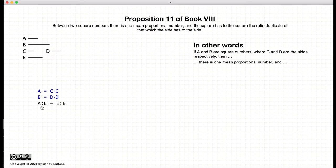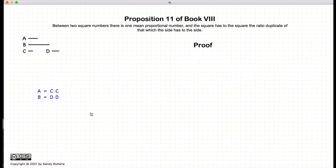Then there will be one number, e, such that a is to e and e is to b, and a is to e is equal to e is to b is equal to the ratio of c to d, and thus a is to b is the duplicate ratio of c to d. So this is what we are trying to demonstrate in this proposition.